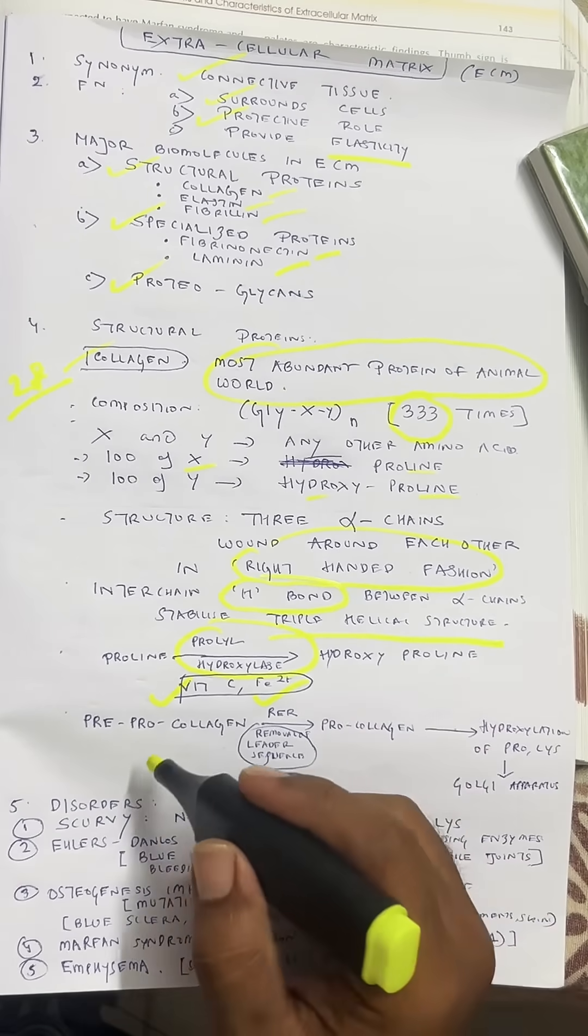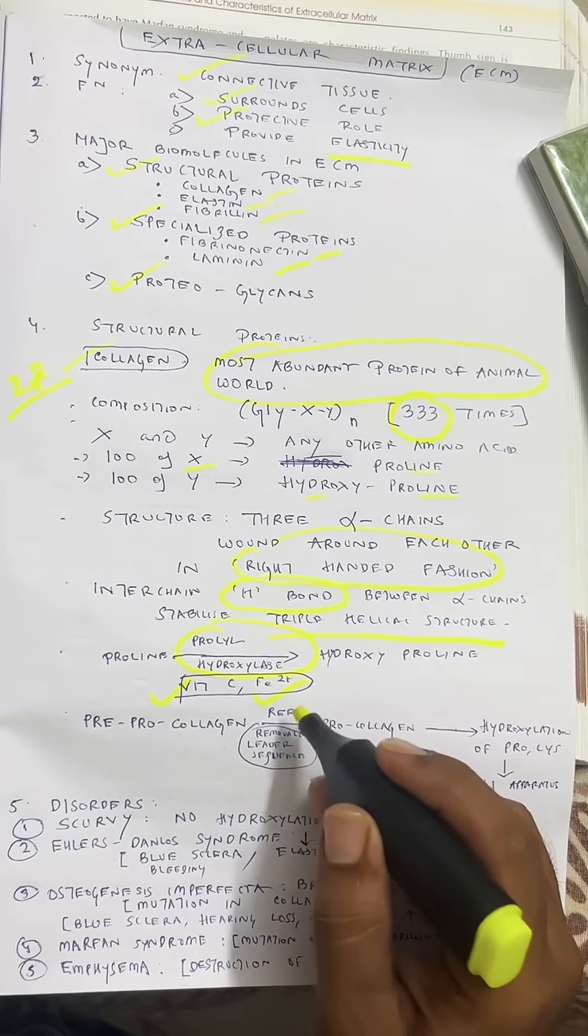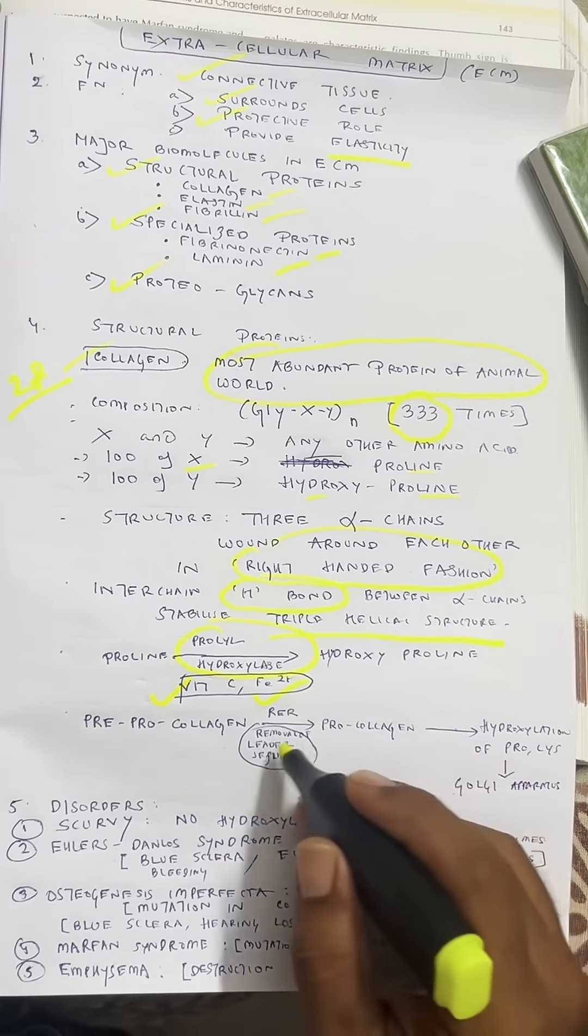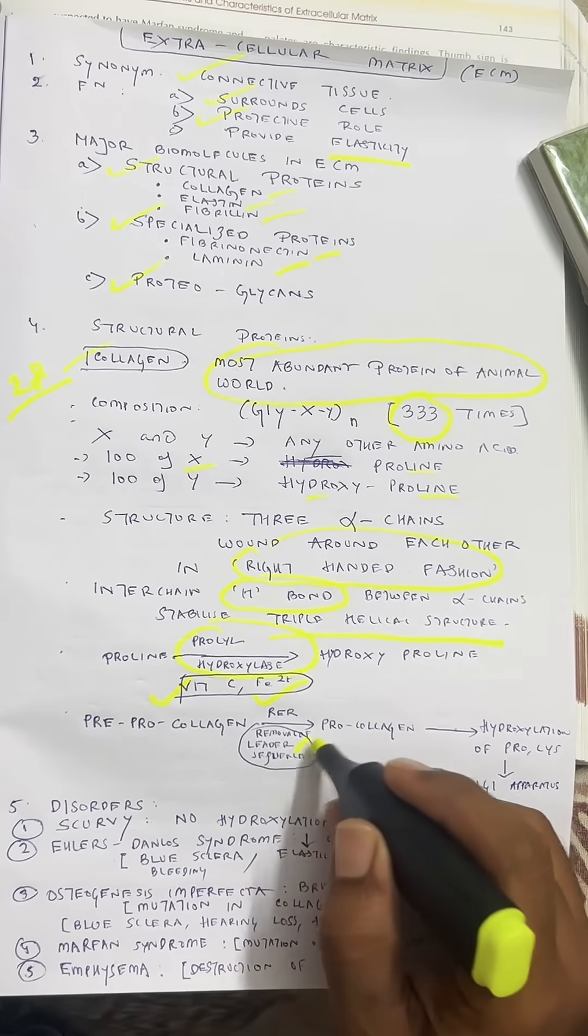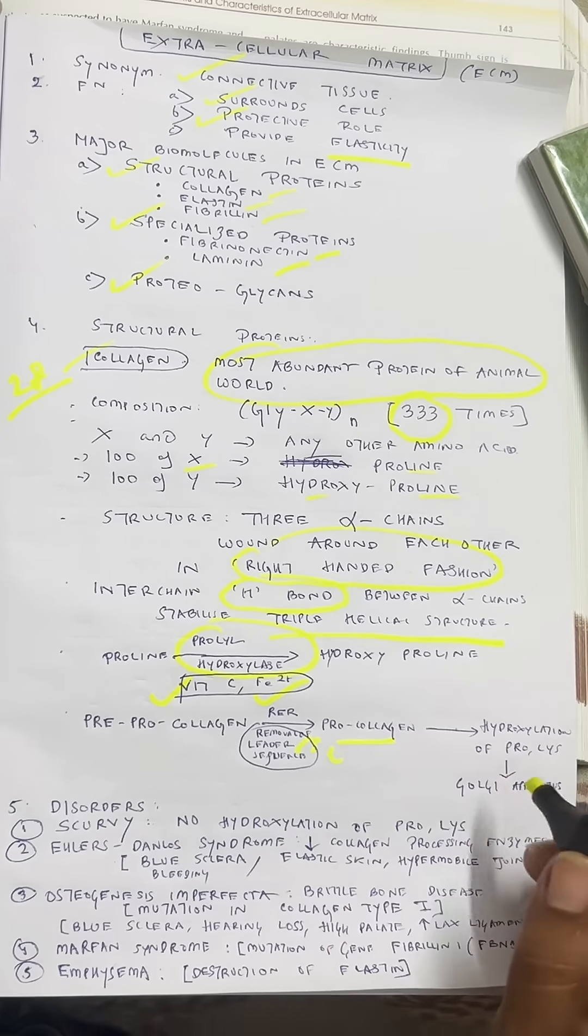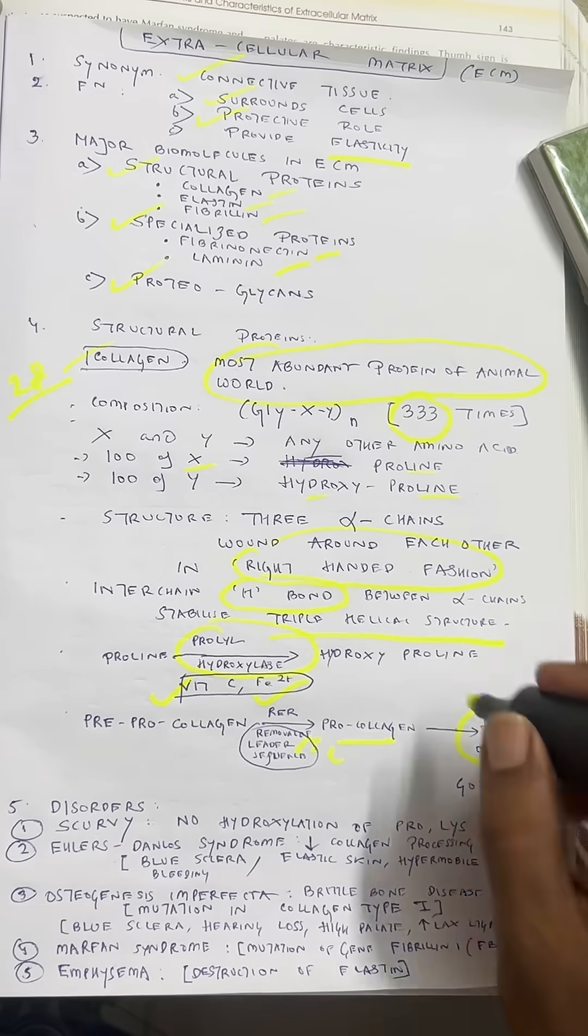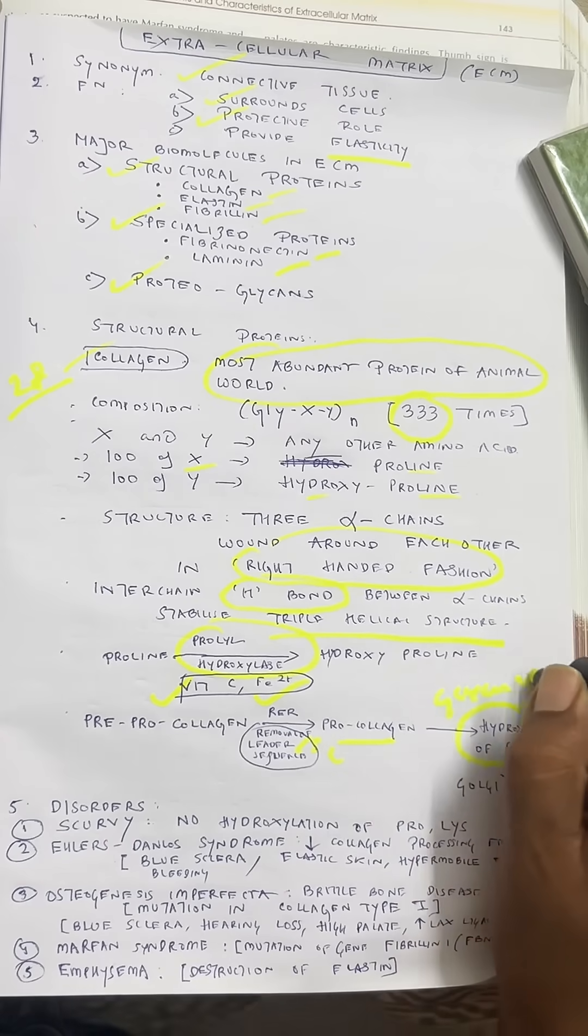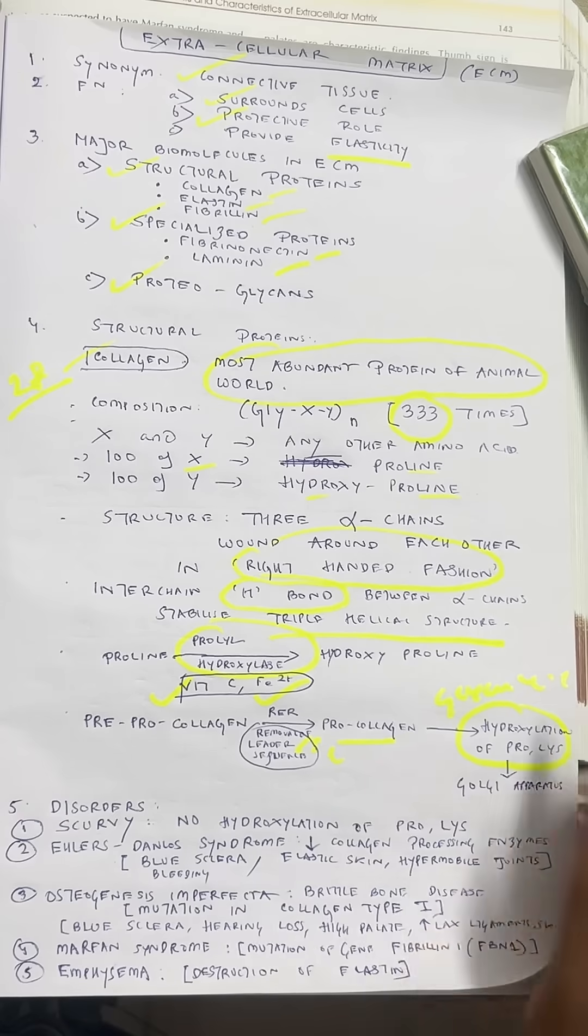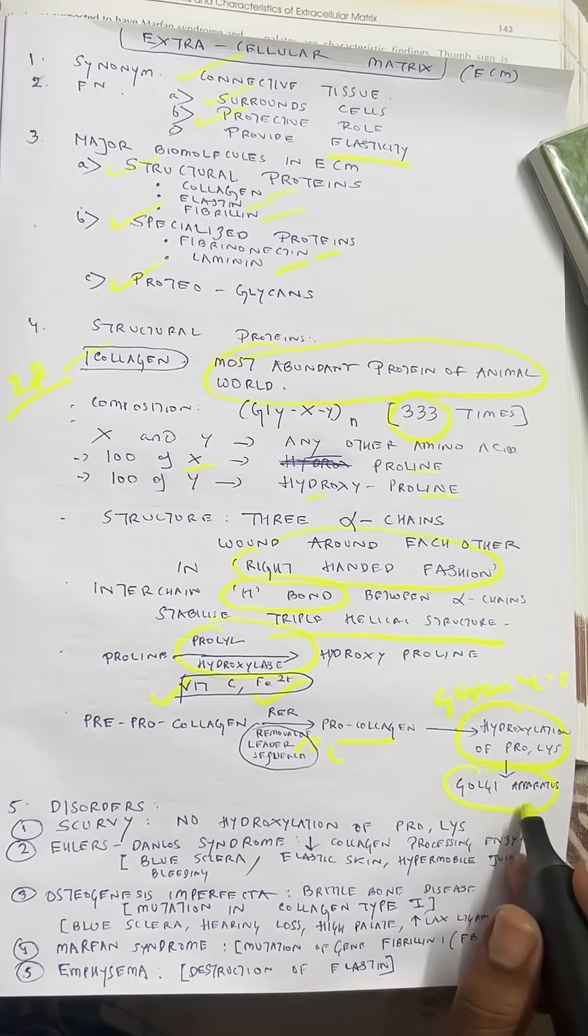First, we have the pre-procollagen form that enters the rough endoplasmic reticulum. We remove the leader or signal sequence to get procollagen. This procollagen subsequently undergoes hydroxylation of proline and lysine residues, along with some glycosylation. Then it enters the Golgi apparatus and fuses with secretory vesicles.